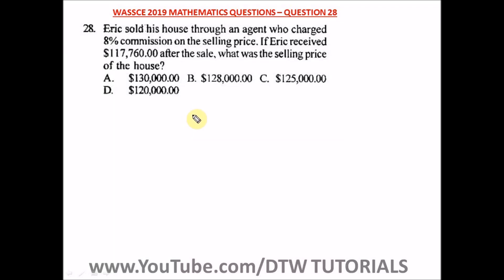Question 28 of the WASSCE 2019 mathematics past paper. It says Eric sold his house through an agent who charged eight percent commission on the selling price. If Eric received $117,760 after the sale, what was the selling price of the house?